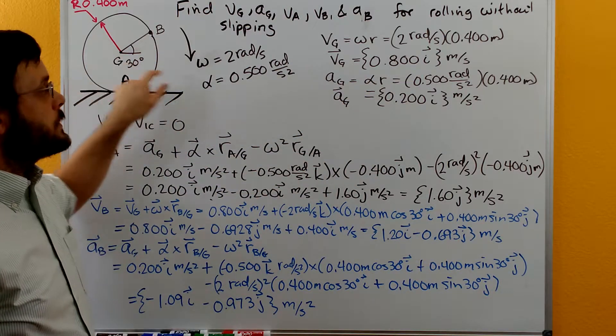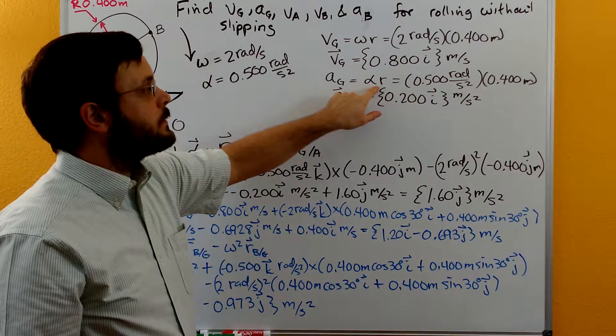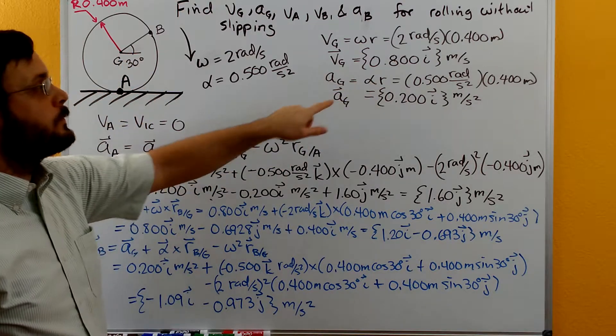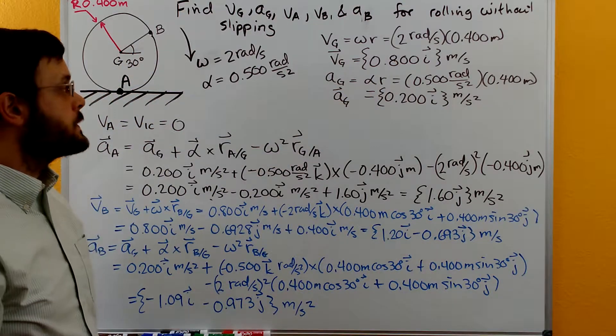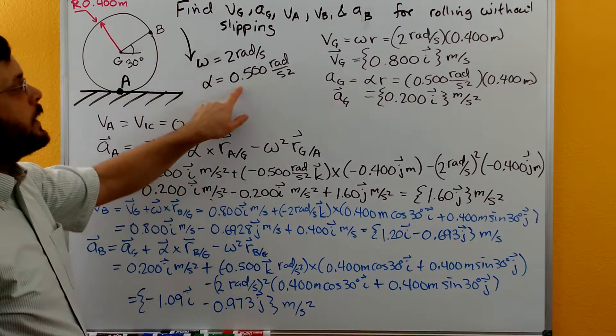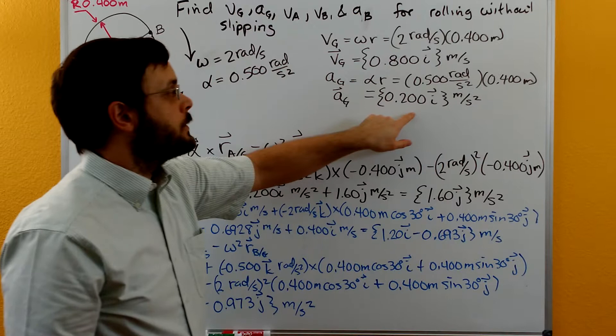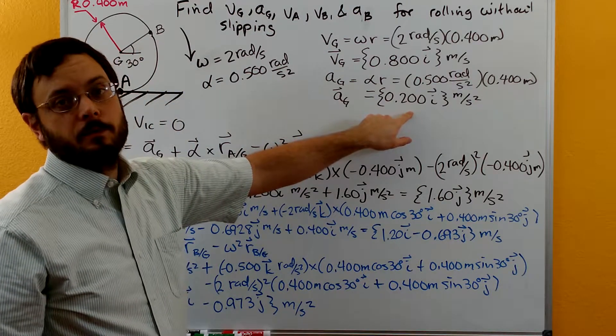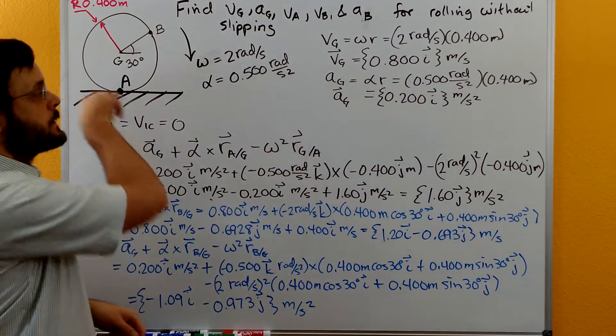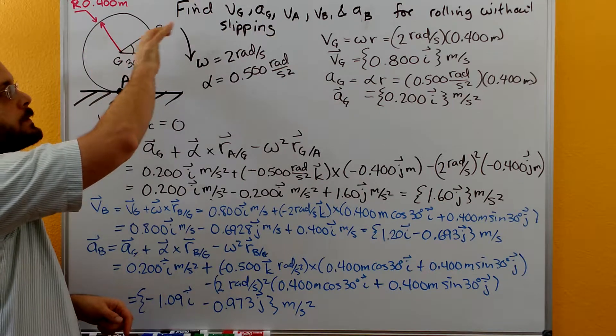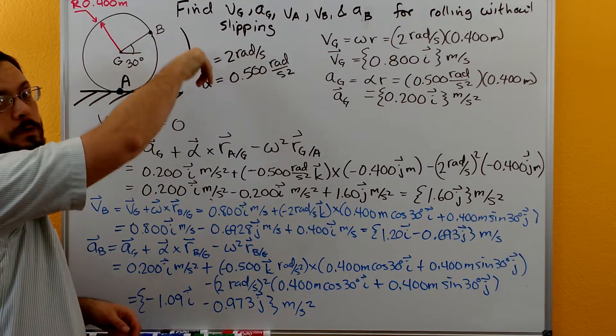The acceleration of the center of gravity is going to be equal to just alpha r, again from the rolling without slipping formulas. And so we have our alpha of 0.5 times the radius of 0.4 which gives us an acceleration of the center of gravity of 0.2. It's also going to be in the i direction because we have the alpha acceleration going in this direction.